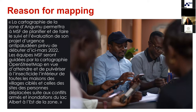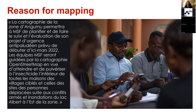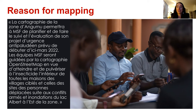Here is the reason for the mapping, as described by our GIS colleague Moise: mapping the Angumu area will allow MSF to plan, monitor, and evaluate its emergency malaria and anti-malaria project scheduled to start by March 2022. MSF teams will be guided by OpenStreetMap data to reach and spray insecticide inside all homes in targeted villages, including those of people displaced by armed conflict and Lake Albert flooding in the east of the Angumu area.